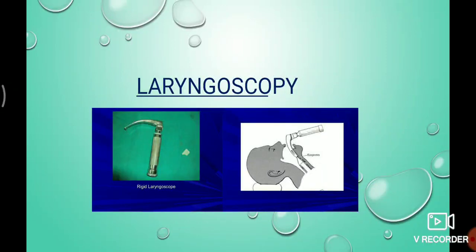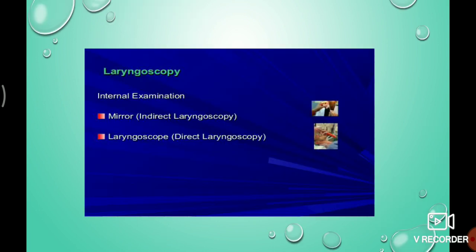Hello, welcome to my channel. Today we are going to discuss direct laryngoscopy. Laryngoscopy can be of two types: indirect laryngoscopy and direct laryngoscopy. These are all internal examination techniques for visualizing the larynx and hypopharynx.